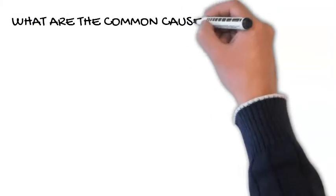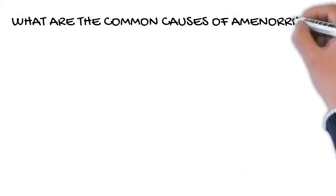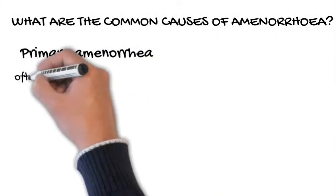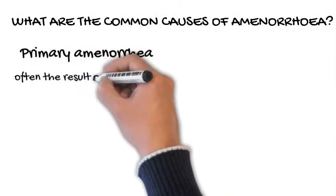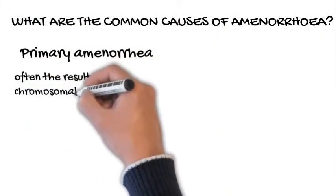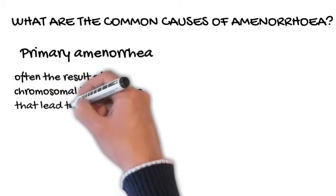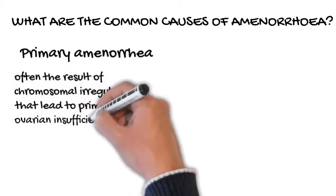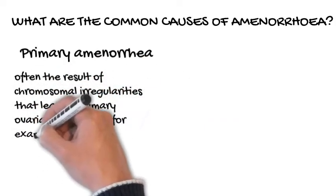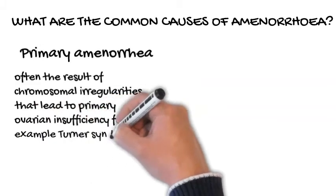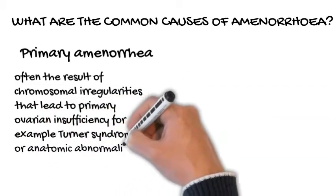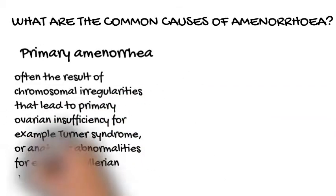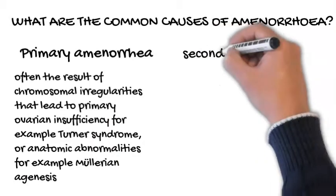What are the common causes of amenorrhea? Primary amenorrhea is often, but not exclusively, the result of chromosomal irregularities that lead to primary ovarian insufficiency, e.g. Turner syndrome, or anatomic abnormalities, e.g. Müllerian agenesis.